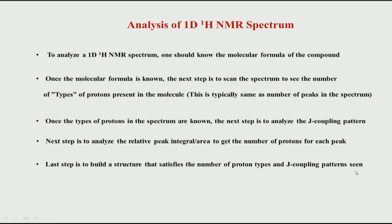We will continue now with the analysis of 1D NMR spectrum. In the last class we saw the different steps required for analyzing and interpreting an NMR spectrum. We have to know the molecular formula, the types of protons, the J coupling pattern and the relative intensity or peak area.